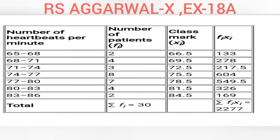Let's see the next slide. Whenever you solve statistics questions — arithmetic mean or any other — first check whether the class interval given is in inclusive form or exclusive form. I have explained inclusive form in my previous videos. Here, the classes given are in exclusive form because the numbers go from 65 to 68, and 68 repeats as the start of the next class — 68 to 71 — and so on. This type is exclusive form, and we solve it in the normal way.